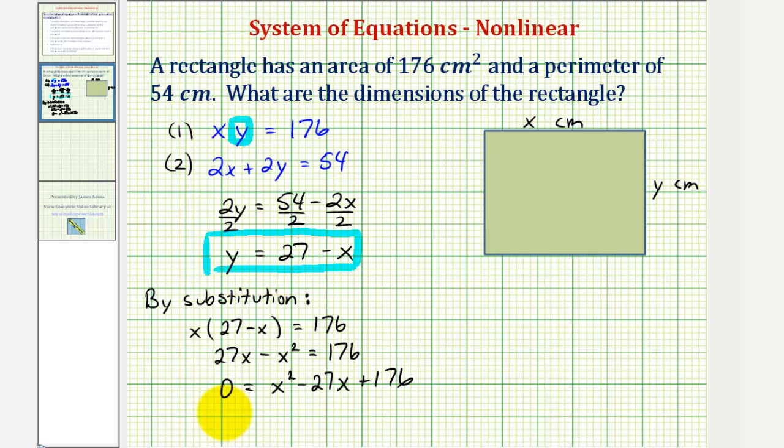If this factors, it'll factor into two binomial factors where the first positions are x and x. The second terms are factors of 176 that add to negative 27. Breaking down 176 into prime factors: 2 times 88, then 88 into 8 times 11. This shows us that 16 times 11 equals 176, and 16 plus 11 equals 27.